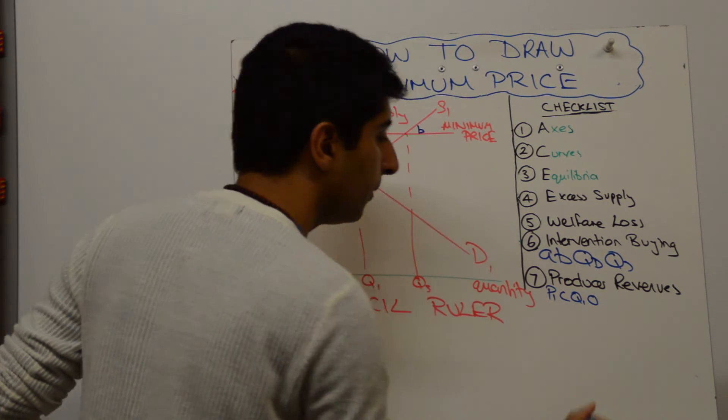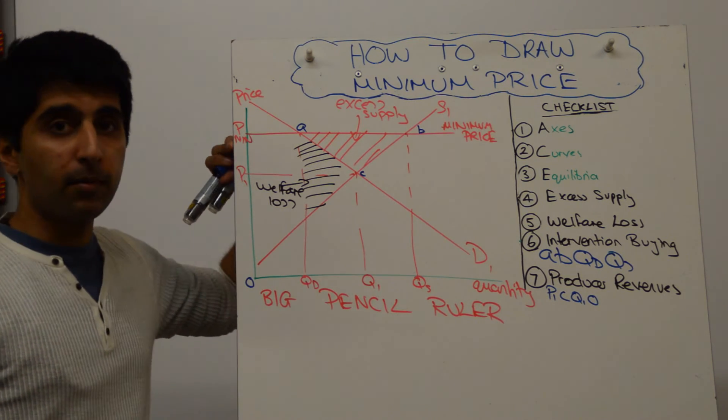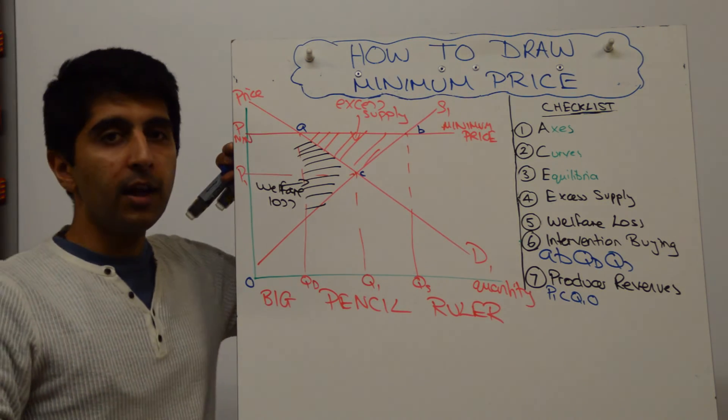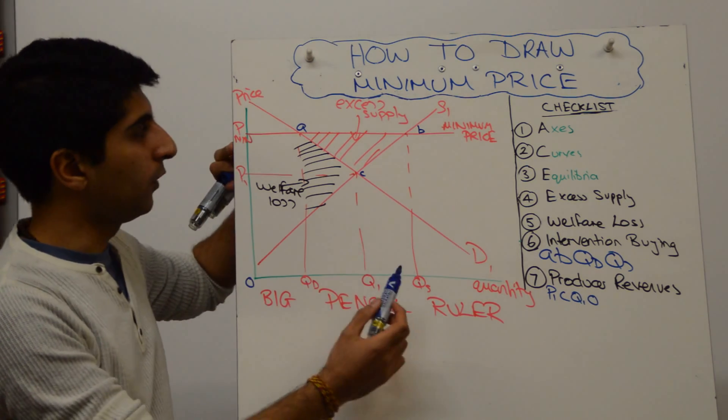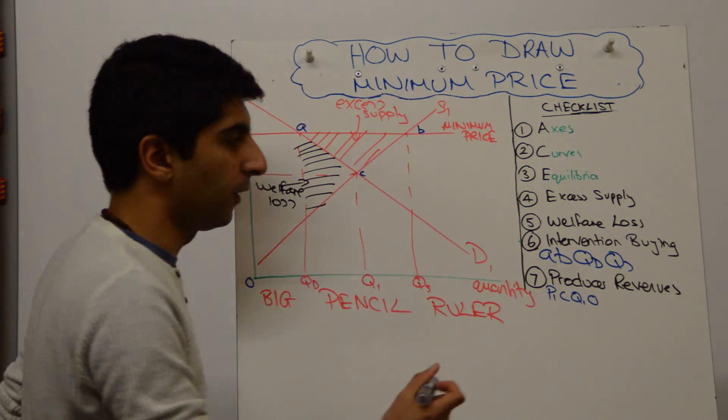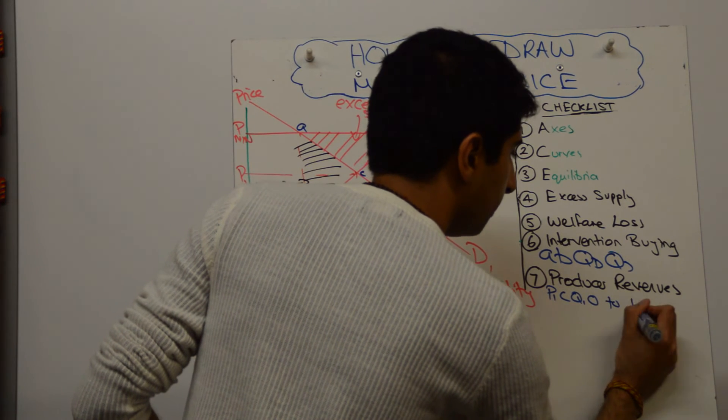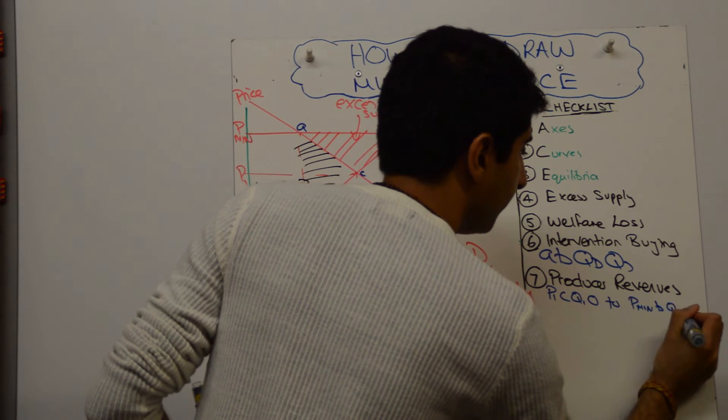And now, the new producer revenue is the minimum price that the producers are getting. Assuming there is intervention buying, they're actually selling QS. So the rectangle, in terms of revenue, is PminBQS0.